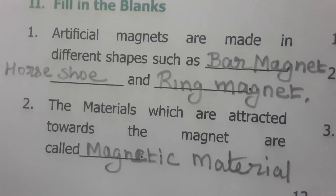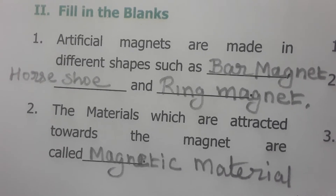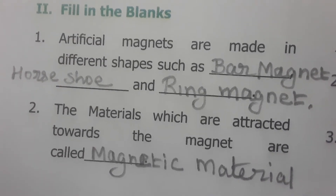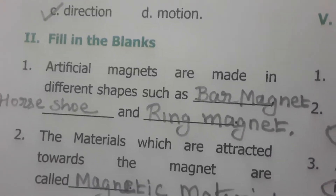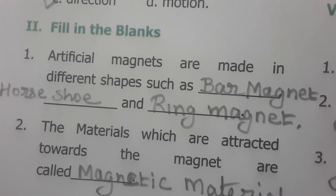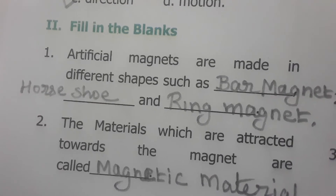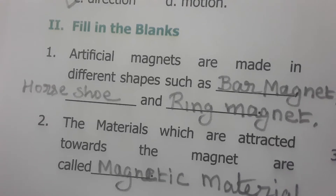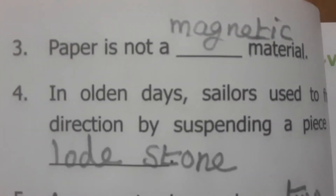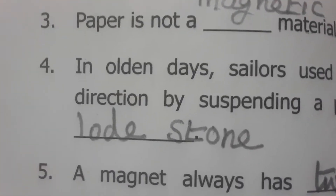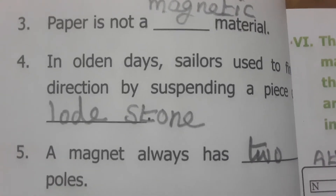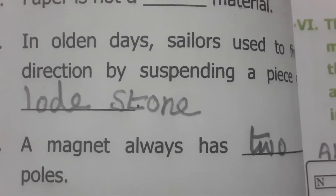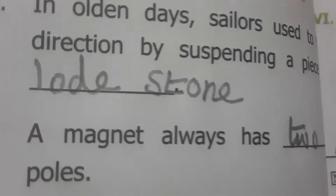The materials which are attracted towards a magnet are called magnetic materials. Artificial magnets are made in different shapes such as bar magnet, horseshoe magnet, ring magnet, and also cylindrical and oval-shaped magnets. Pepper is not a magnetic material because it is never attracted by magnets. In olden days, sailors used lodestones suspended in water to detect directions.